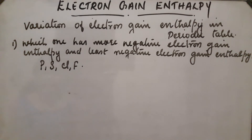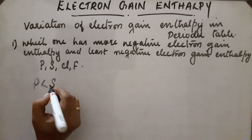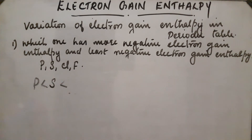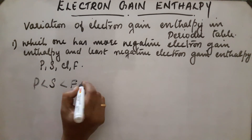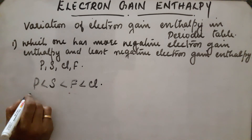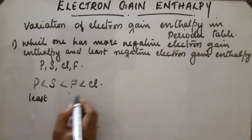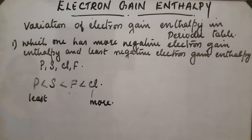Question: which one has the most negative and least negative electron gain enthalpy among phosphorus, sulfur, chlorine, and fluorine? From left to right, negative electron gain enthalpy increases, so phosphorus has the least. Then comes sulfur, then fluorine, then chlorine — because fluorine's 2p orbital has more electron-electron repulsion than chlorine's 3p. So the order is: phosphorus (least) < sulfur < fluorine < chlorine (most negative).